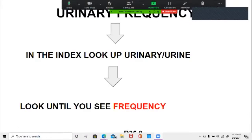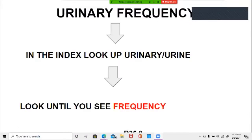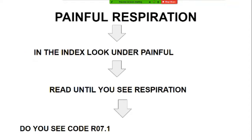So we've got urinary frequency. Our next one is going to be painful respiration. If you have something that's 'pain' or 'painful,' just make note — you're going to go to 'pain' in the index. I went to 'respiration' yesterday and thought, why did I do that after all these years? Always go to 'pain' or 'painful.'